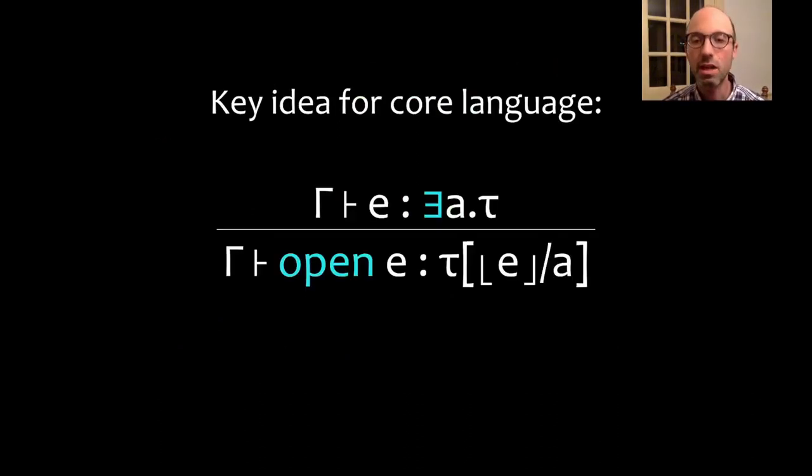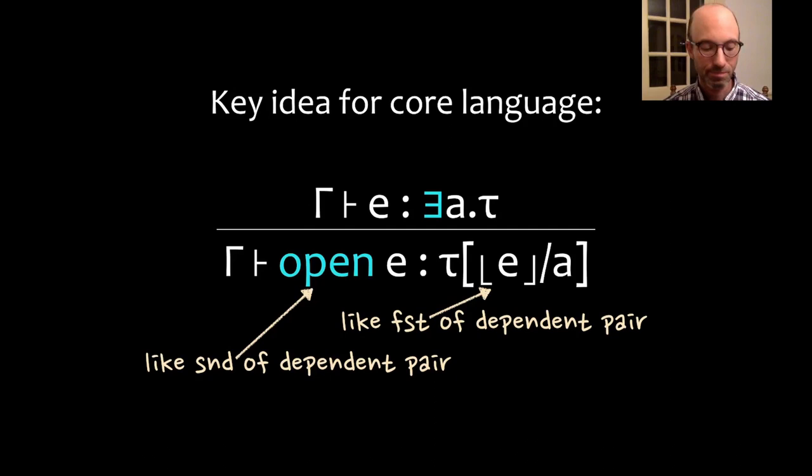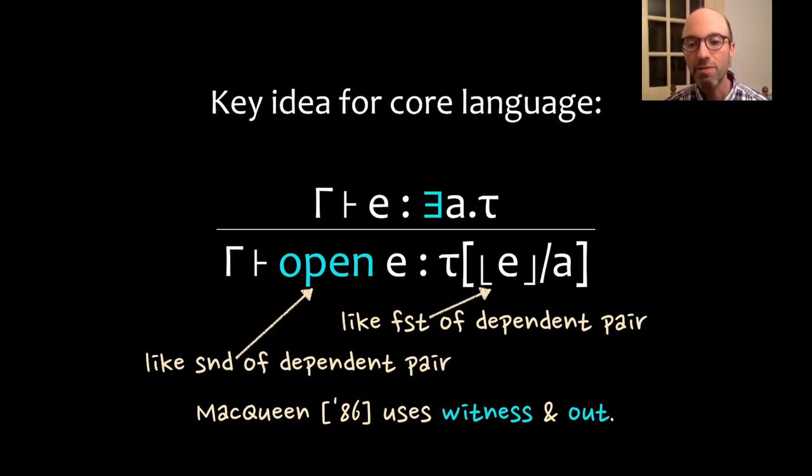The key idea that unlocks the design that we want is to not use unpack, but use another construct called open. The idea here is if I have an expression E of existential type, then open E is just the inner type, this type τ, where this type variable A is replaced with the existential projection of E. We can almost view an existential type as a dependent pair, where there's a type as well as a term that depends on that type. These funny brackets, this existential projection, is like calling first of that dependent pair. Open is like second of that dependent pair. This is not a new idea. McQueen in 1986 called this witness and out instead of my funny brackets and open. Using this open construct unlocks everything else that we need in order to get these lightweight existentials.